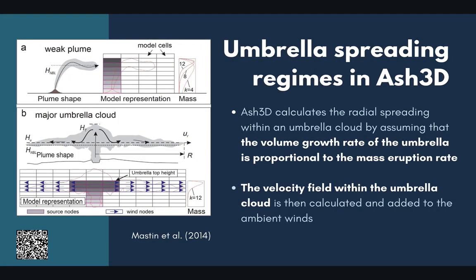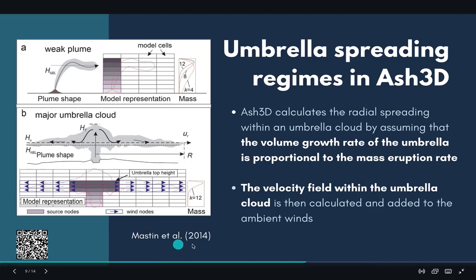Another benefit of using the ASH3D model is that it's been modified to include an approximation of umbrella cloud spreading, which is really important when studying large eruptions. In ASH3D, this has been achieved by calculating the radial winds inside the umbrella cloud based on a relationship between the mass eruption rate and the volume growth rate of the umbrella cloud. Using this relationship, the velocity field within the umbrella cloud is calculated and added to the ambient wind field. This is shown in the figure, where in the top panel we have the normal ASH3D setup with a small plume, and for large eruption scenarios, the umbrella cloud modification adds radial umbrella cloud velocities — shown with blue arrows — to the ambient wind field, increasing the spreading at the source region. This is a figure from Mastin et al. 2014.